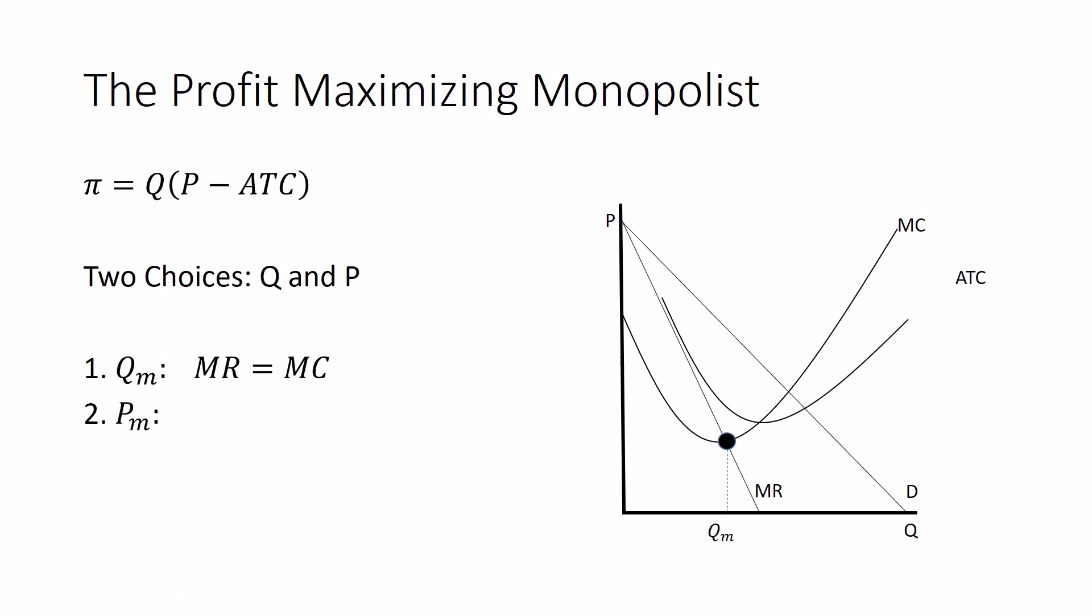Step two, they're going to choose their price. Now we've got a quantity set, and now we want to choose the best price. Well, in order to do that, let's remember there's a tool on this graph for finding the relationship between quantity and the price people are willing to pay.